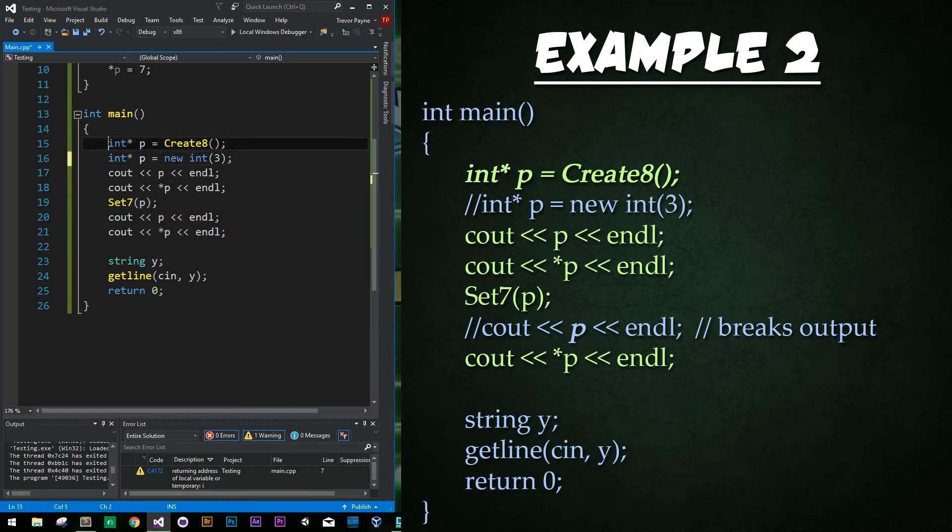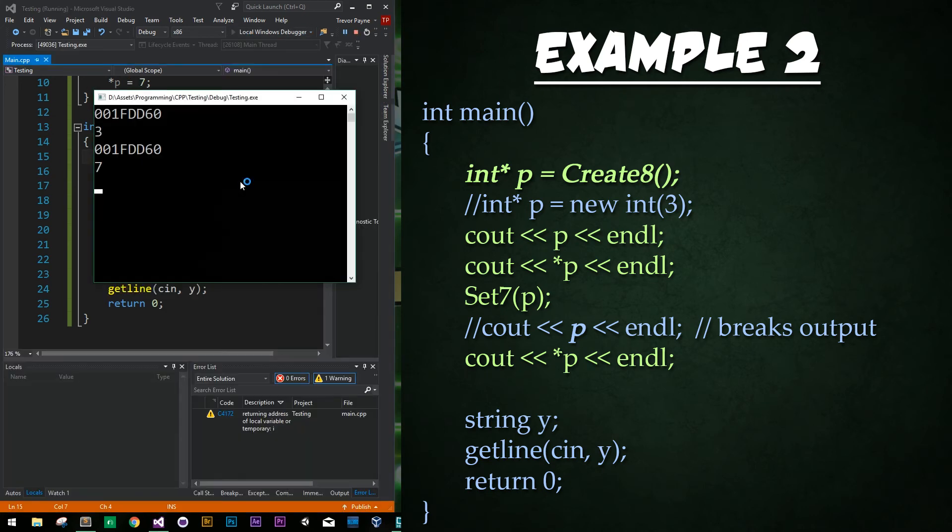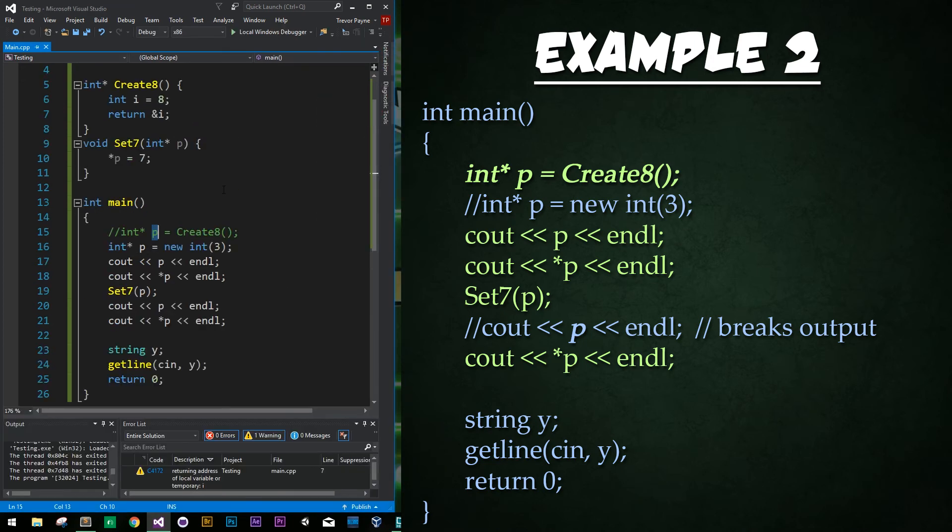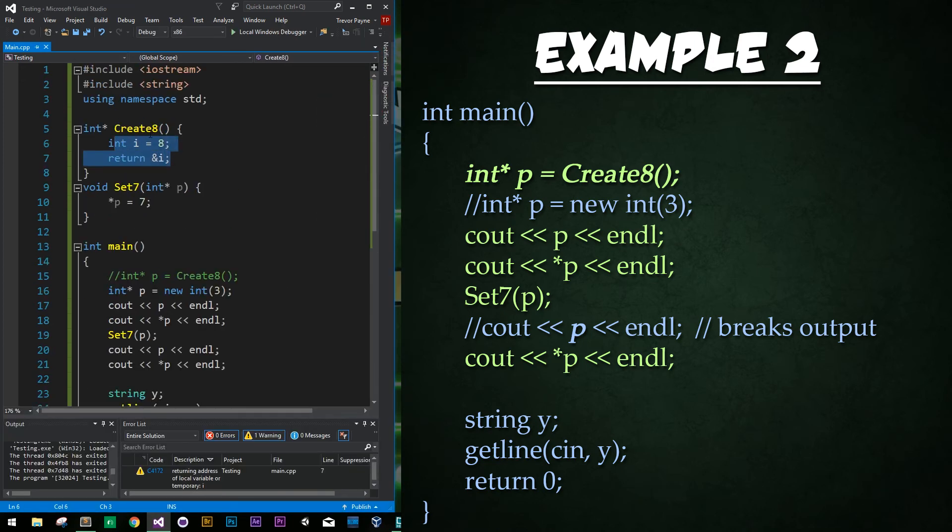Now note if we do uncomment this line of code and comment out that first and run everything will run just fine. We'll have the value of 3 being set initially and then we'll have 7. Set 7 work just fine. Very cool.